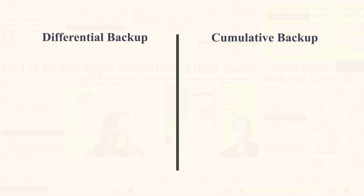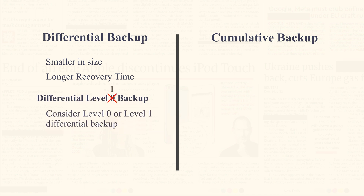There are 2 types of incremental backups: differential incremental backup and cumulative incremental backup. Differential incremental backup is a kind of incremental backup which is smaller in size but takes longer time to recover from. In differential incremental level 1 backup, RMAN performs backup of all the data blocks that have changed since the last level 0 or level 1 backup.